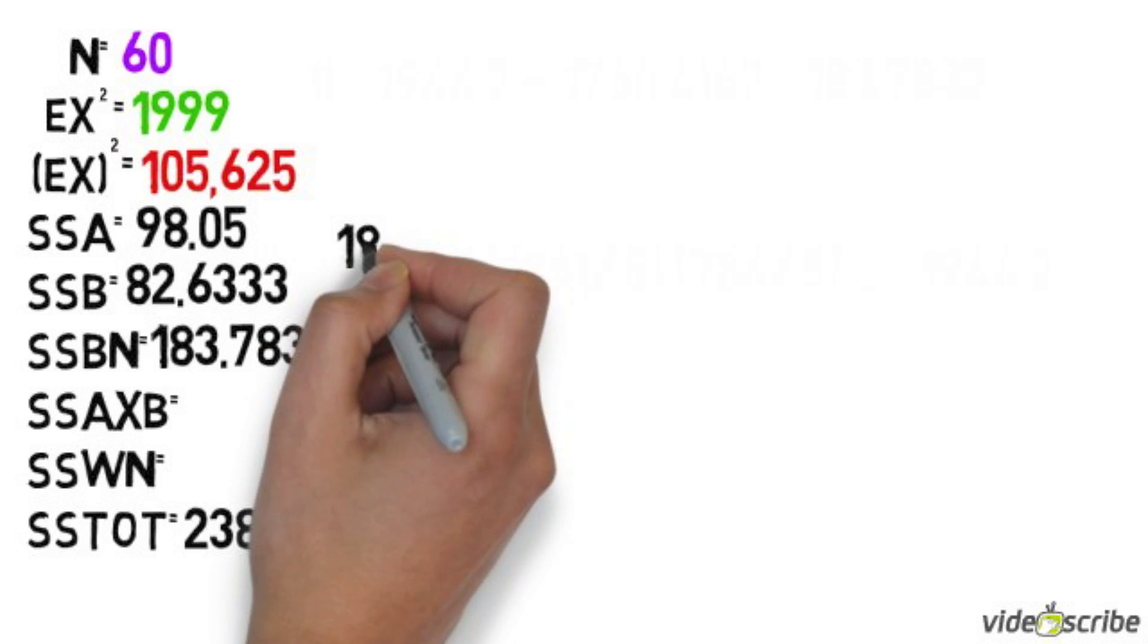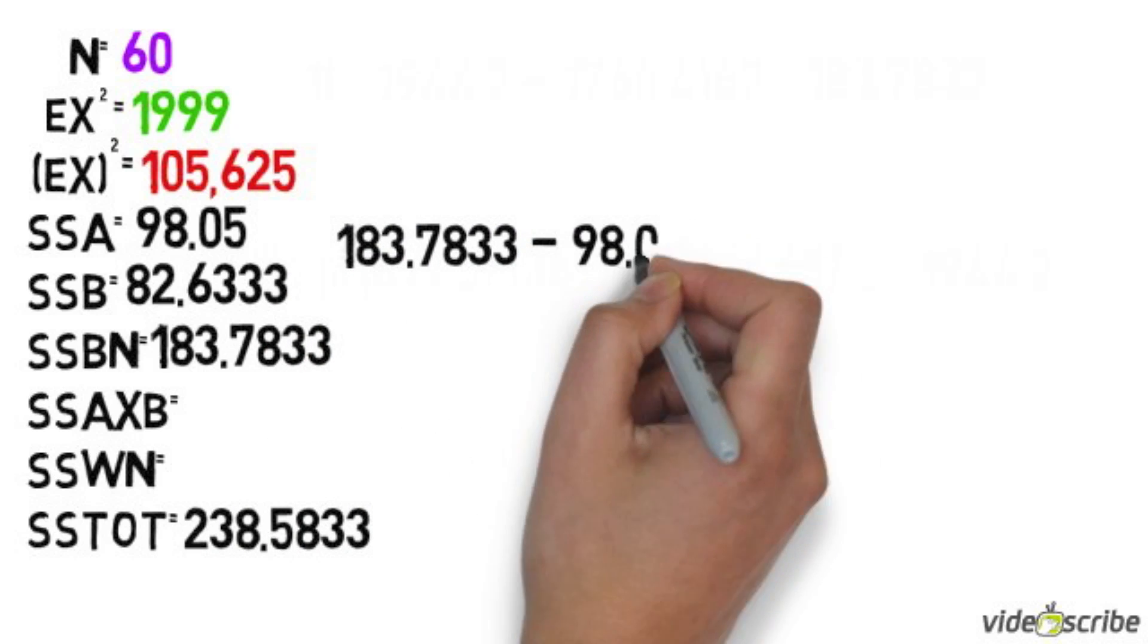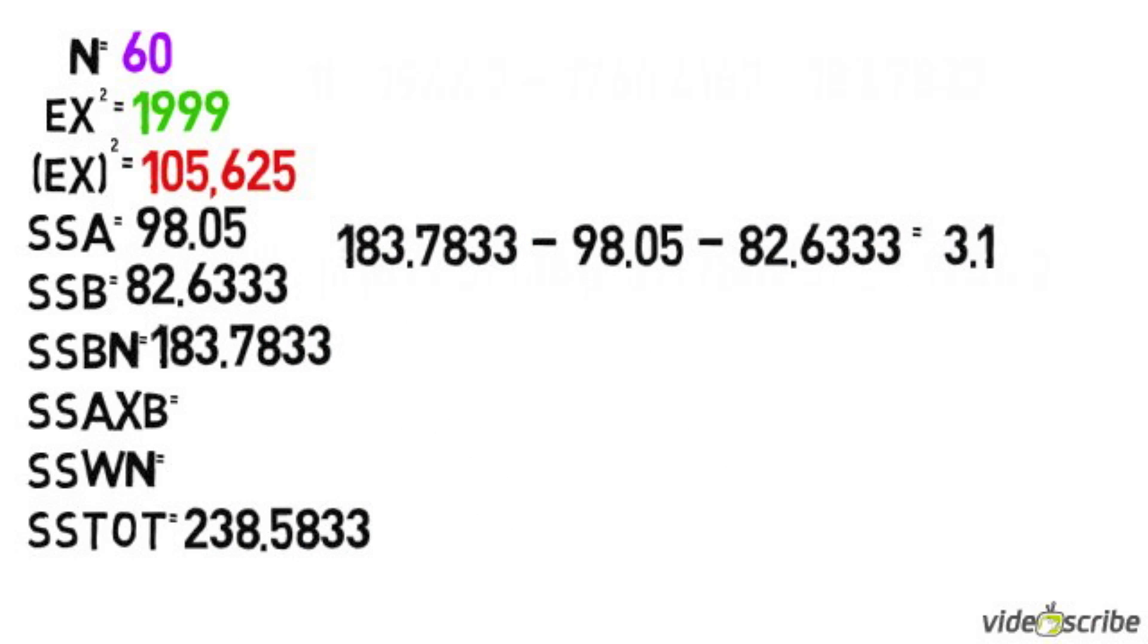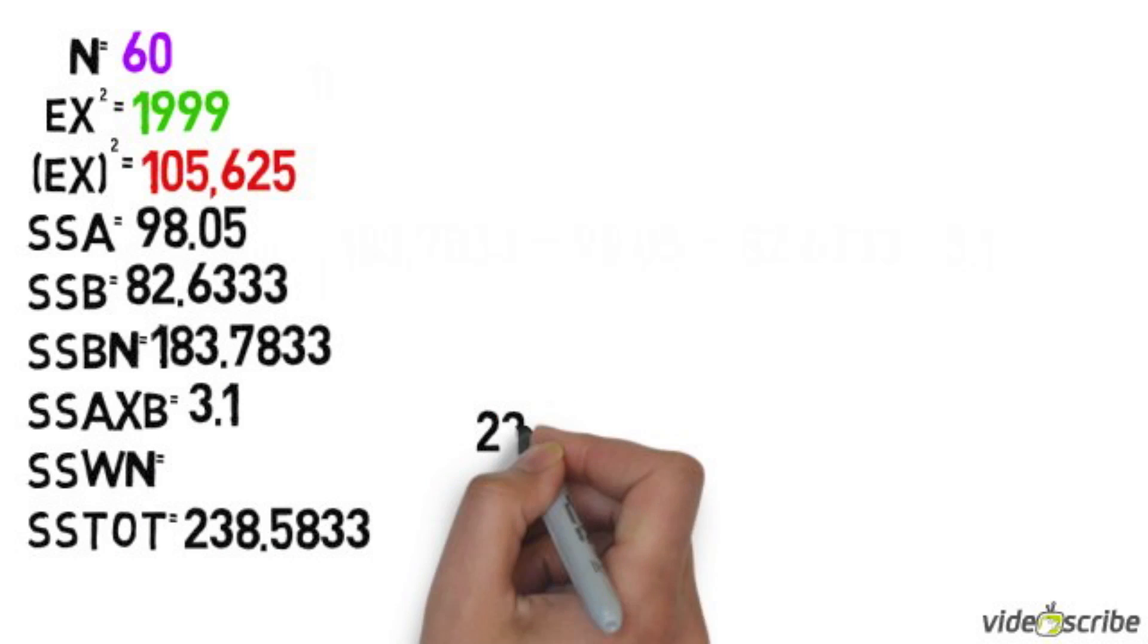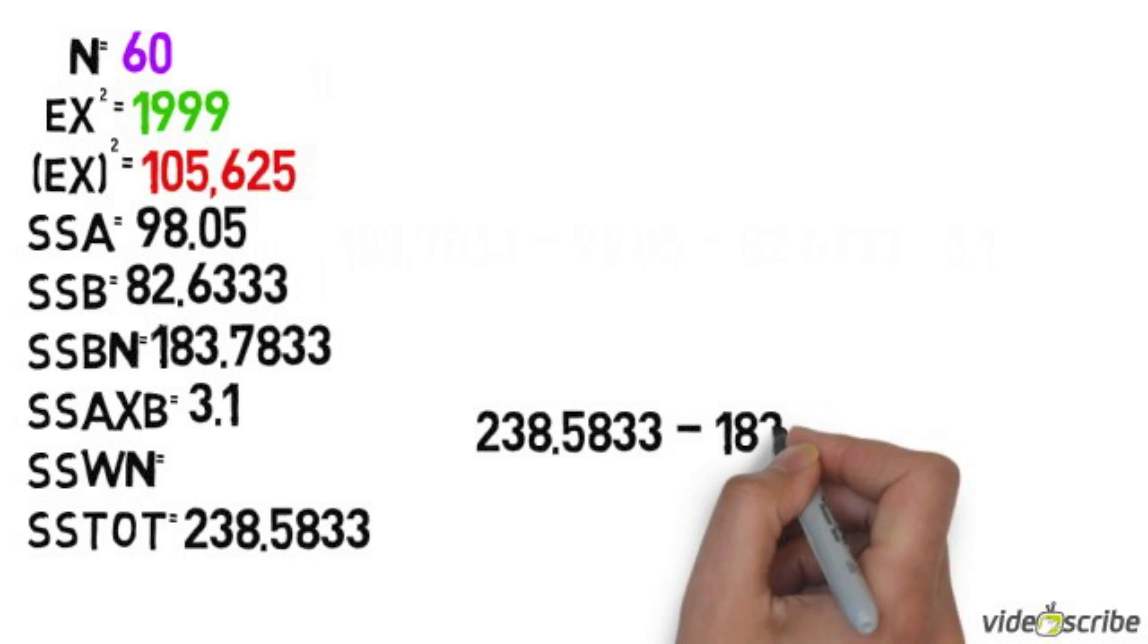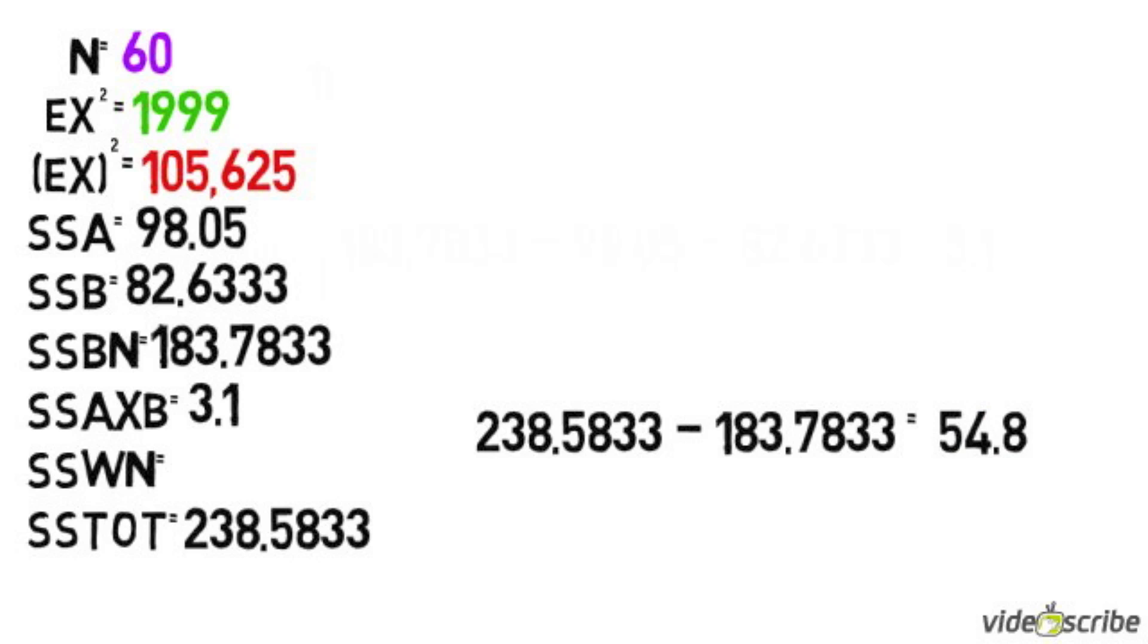Next, to find sum of squares of the interaction, we take sum of squared between minus our sum of squared for factor A minus sum of squared for factor B. For sum of squares within, we take sum of squares total minus sum of squares between groups.